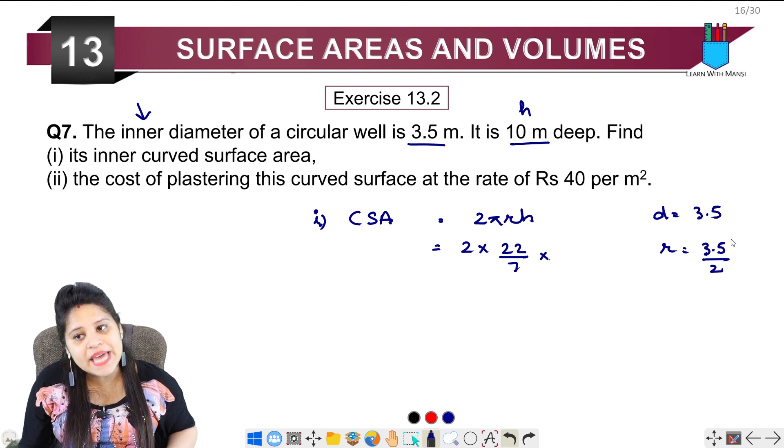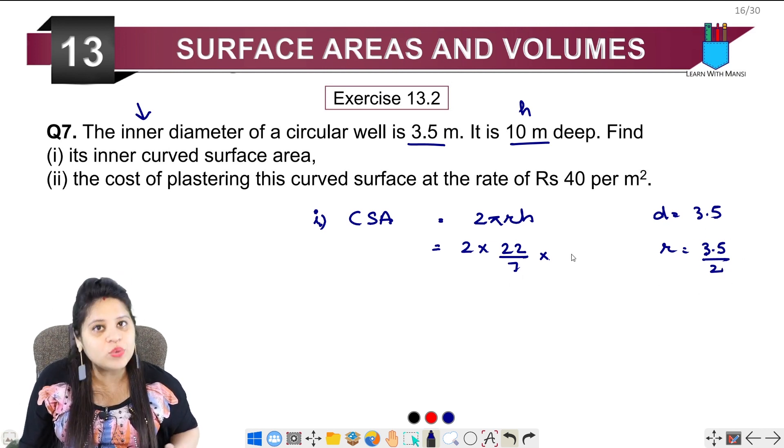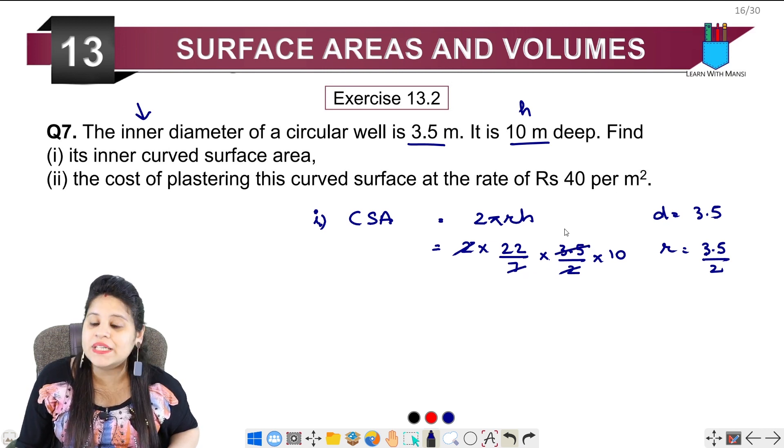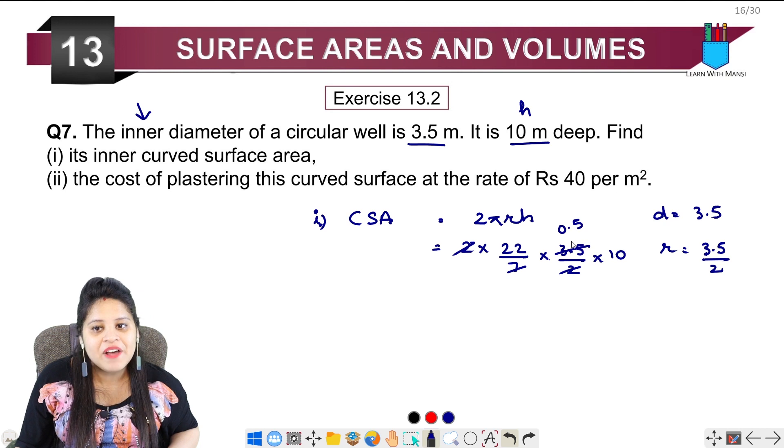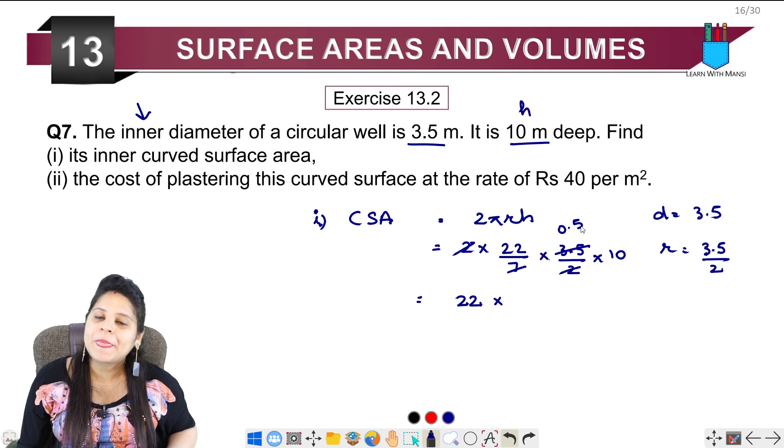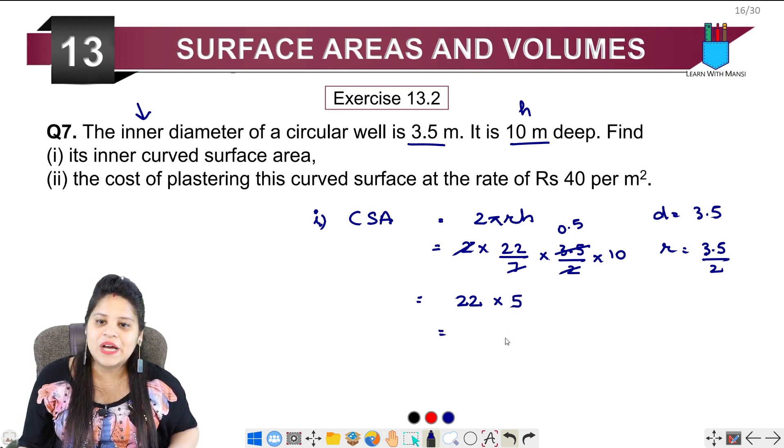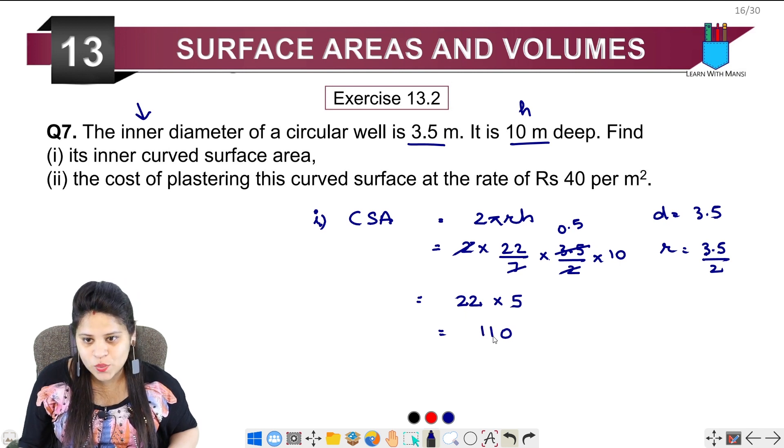So this is 3.5 upon 2, and height is 10. Now see how simple it is: 2 and 2 cancel, 7 and 35 cancel, so this will be 0.5. Now we have 22 into 0.5 into 10. Multiply: 22 × 0.5 = 11, then 11 × 10 = 110 meter square.